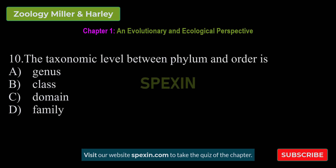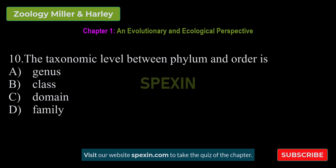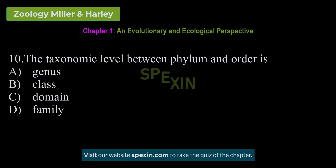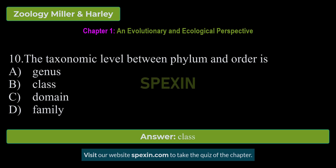The taxonomic level between phylum and order is: Genus — Class — Domain — Family. Correct answer: Class.